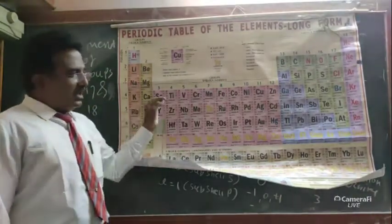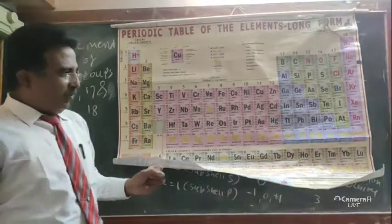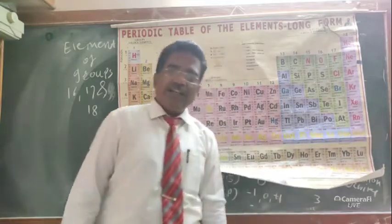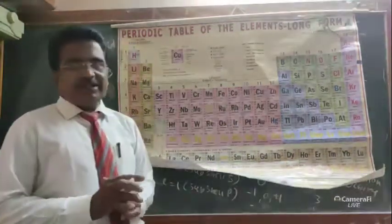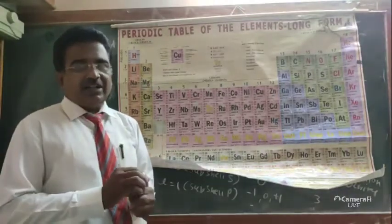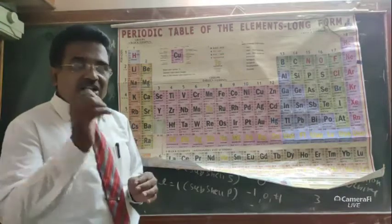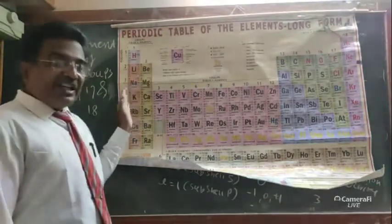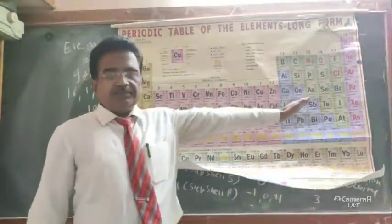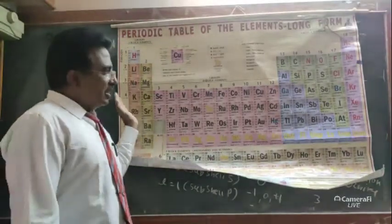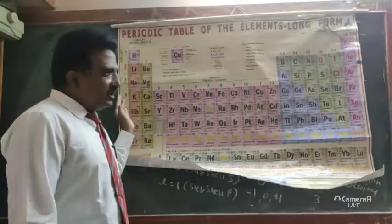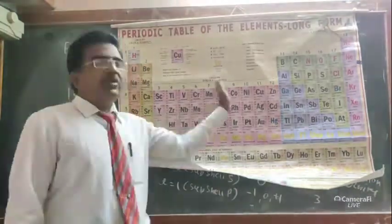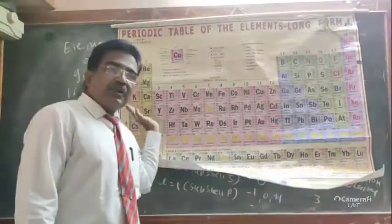In the periodic table, there are 7 periods and 118 elements in total. Among these elements, there are metals, non-metals, and metalloids. The non-metallic character increases from left to right, and the metallic character decreases from left to right.